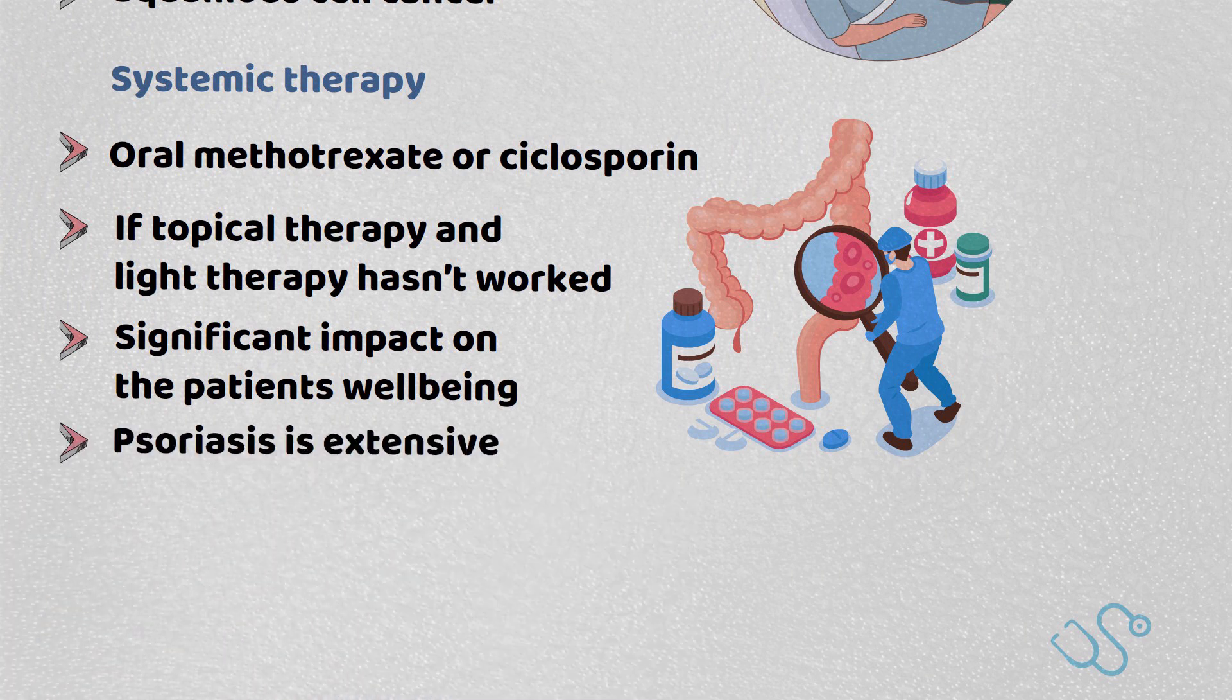Generally speaking, methotrexate is often chosen first, unless there is a need for rapid resolution, or palmoplantar pustulosis, or if conception is being considered, in which cyclosporine is often preferred.